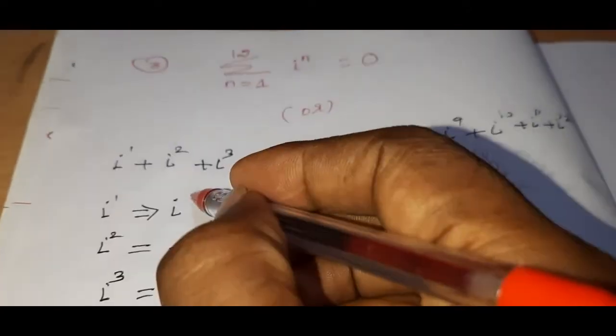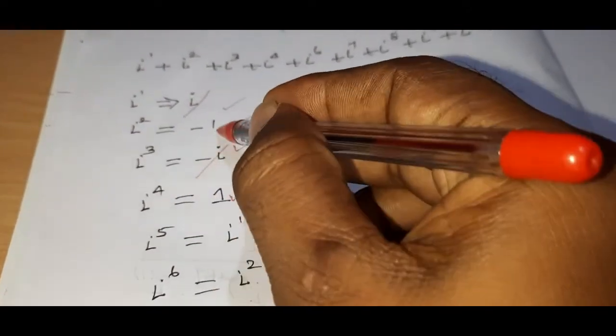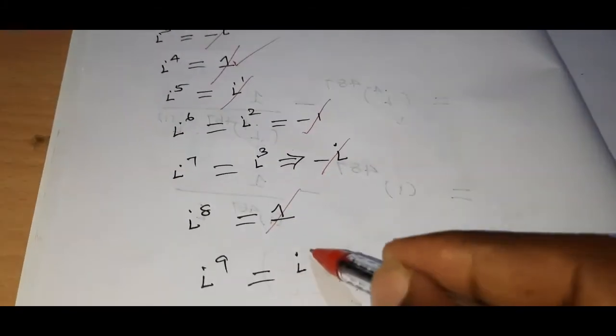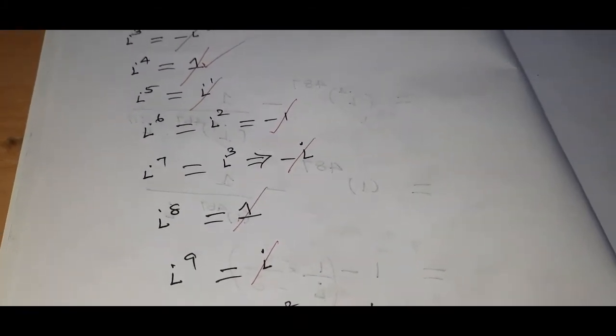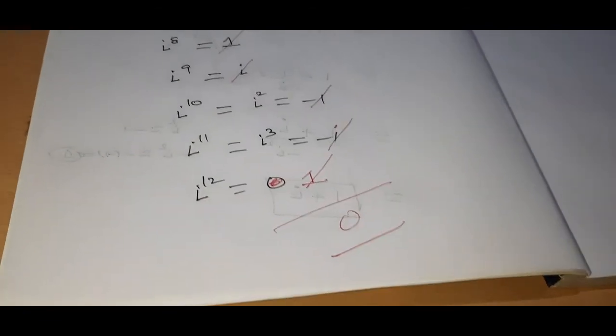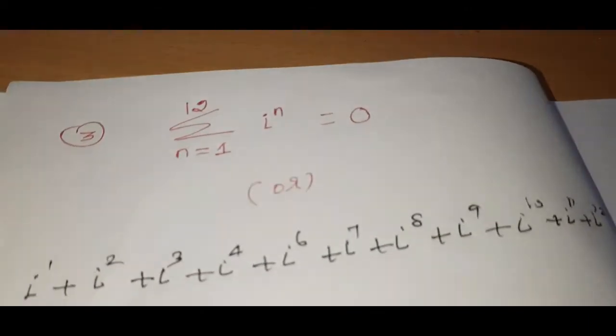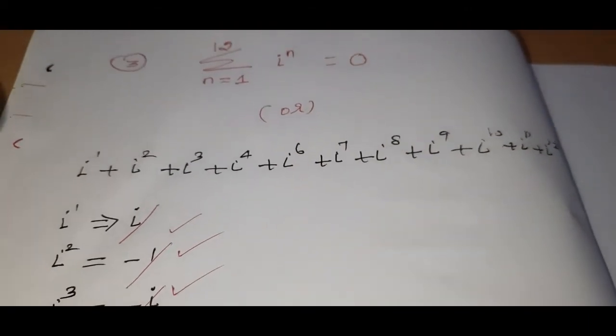Since 12 is a multiple of 4, the value is equal to 0. Writing out the full sequence: plus i, minus 1, minus i, plus 1, plus i, minus i, minus 1, plus 1, plus i, minus i, minus 1, plus 1. All terms cancel and the value is equal to 0.